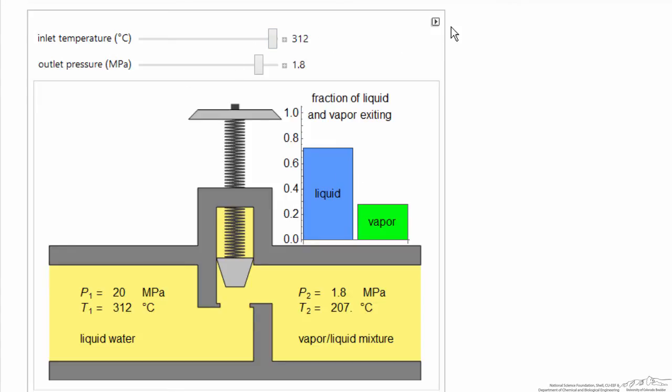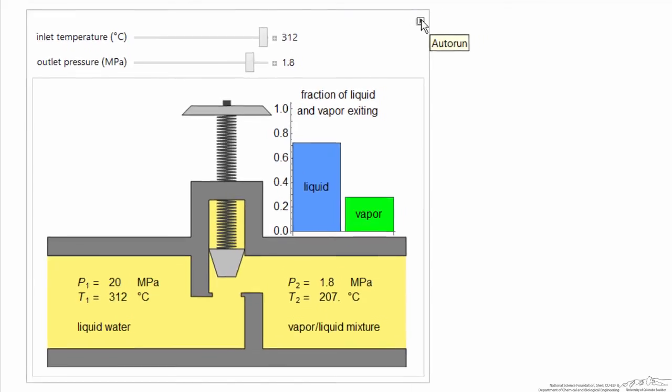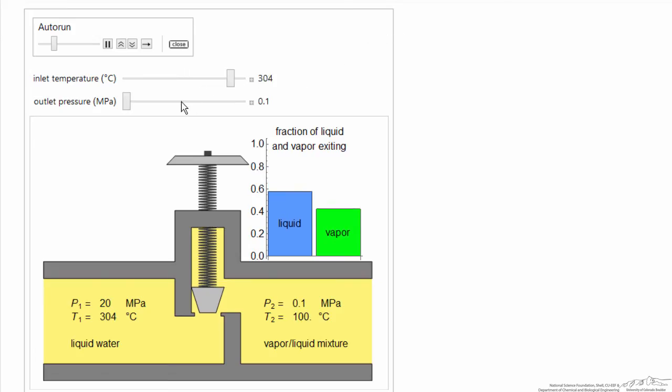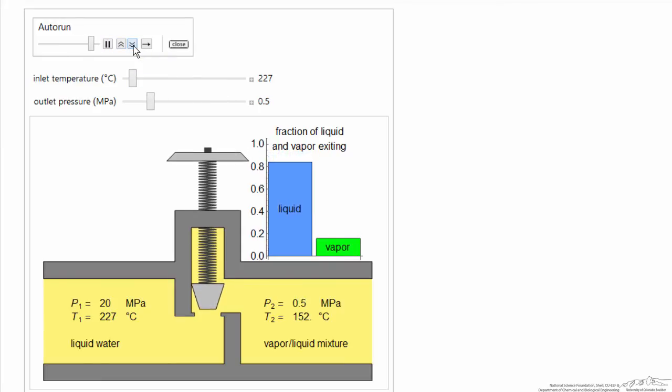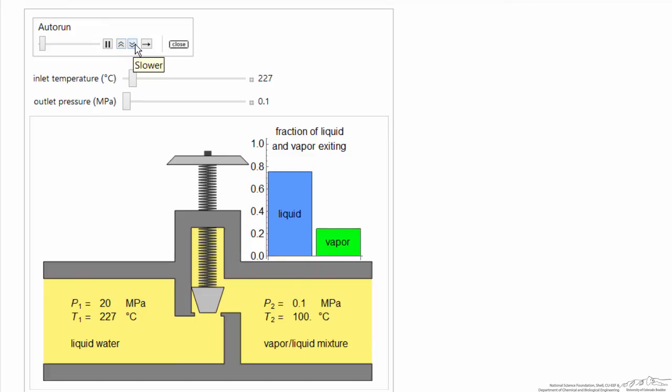We can also use the button here for auto-run, and when we click that, it cycles through the conditions. We can slow down the speed of this cycling by clicking on the slower button.